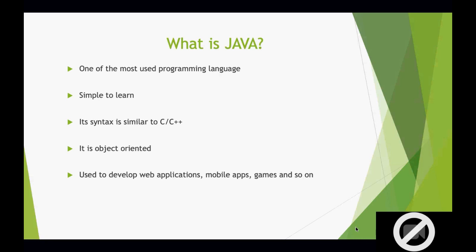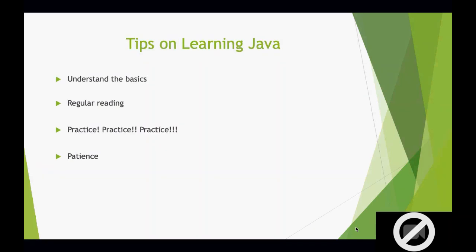When compared to Python as well, programs written in Java typically run faster than those written in Python. Java is also used to develop web applications, gaming apps, and mobile apps as well.